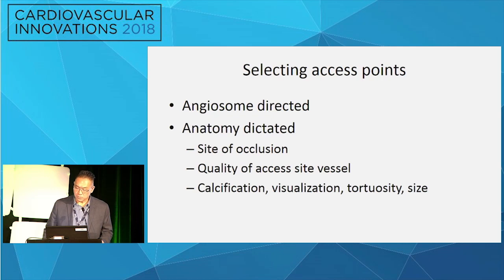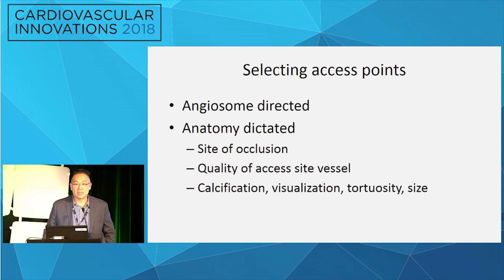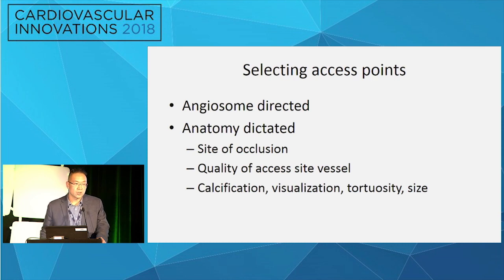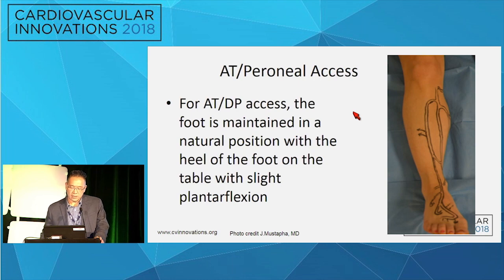Selecting the access point is somewhat common sense — it's angiosome-directed ideally. So if you have an ulcer on the bottom of the foot, you're going to go after the posterior tibial, where the posterior tibial probably reconstitutes, and get that access. On a practical level, sometimes it's anatomy-dictated: it depends on the site of occlusion, the quality of the access vessel — is it calcified, what's the size, is it visualized under ultrasound, is it tortuous? So you kind of have to take what you're given. For anterior tibial or peroneal access, the foot is ideally in a certain position.